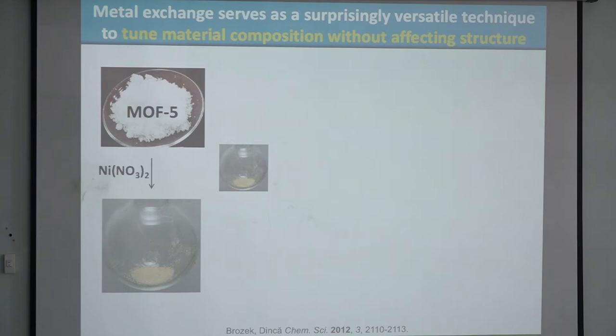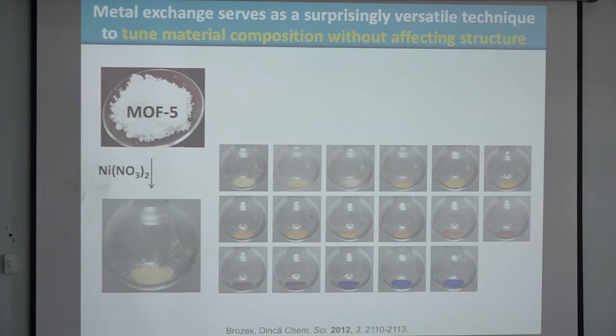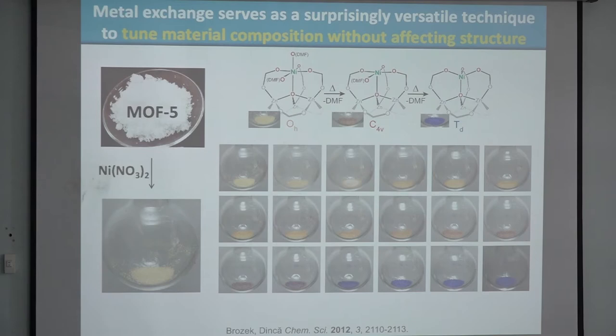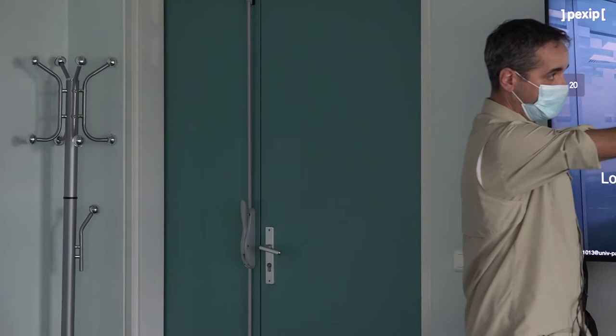If you want to make the MOF-5 structure with any other metal, you cannot do it by self-assembly — nickel doesn't want to make that structure, cadmium wants to make something else. But you can take pre-made MOF-5 and just soak it in a nickel nitrate solution. Initially the crystals turn yellow, but under vacuum they eventually turn blue. The nickel replaces the zinc, but since it's d8, it doesn't want to be tetrahedral — it wants to be square planar or octahedral.